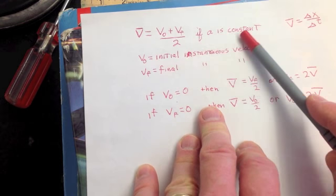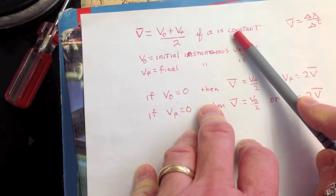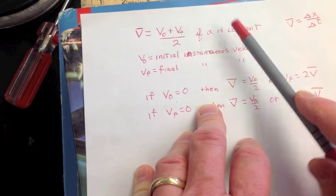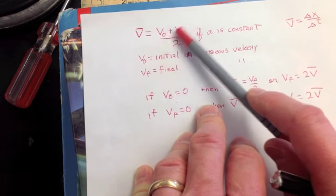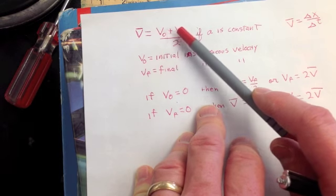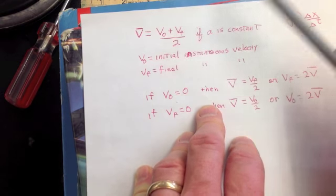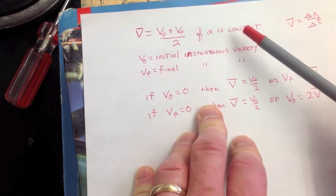That's true as long as any acceleration you have is constant, including zero. If I have no acceleration, these two are the same, and I get V₀ plus V₀ divided by two would be V₀, because your velocity is not changing.